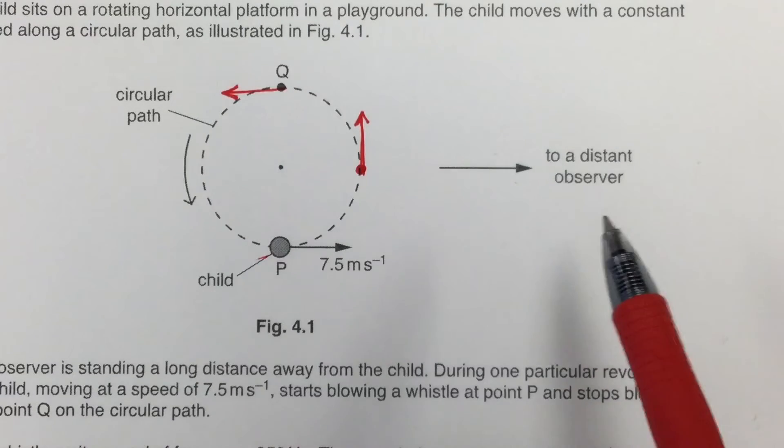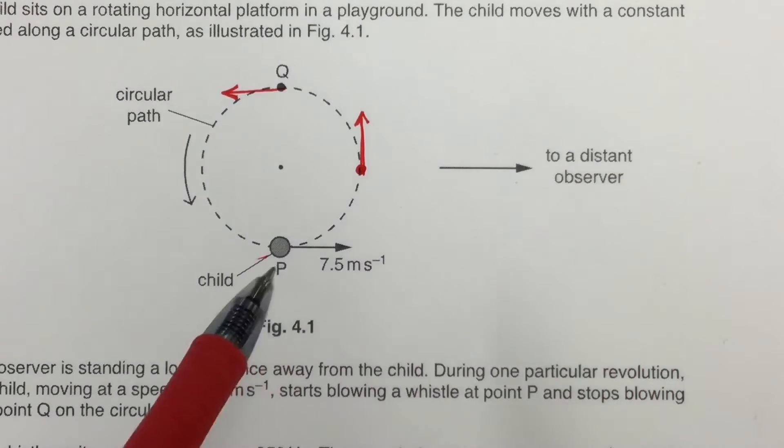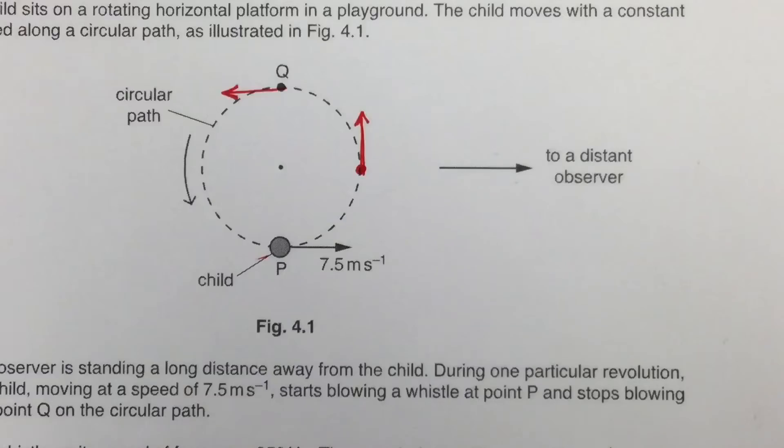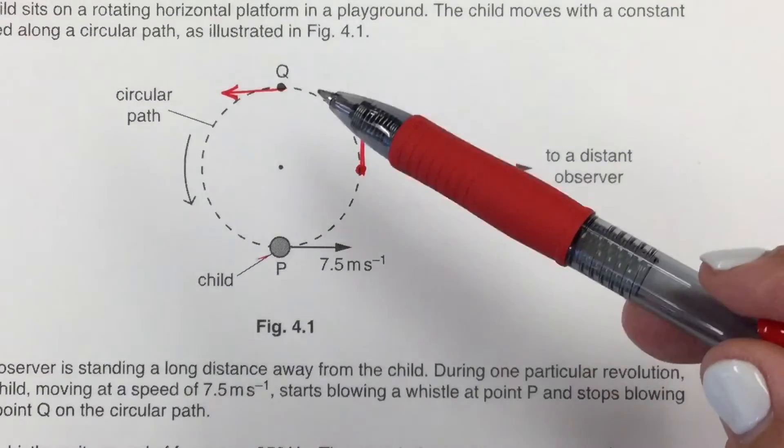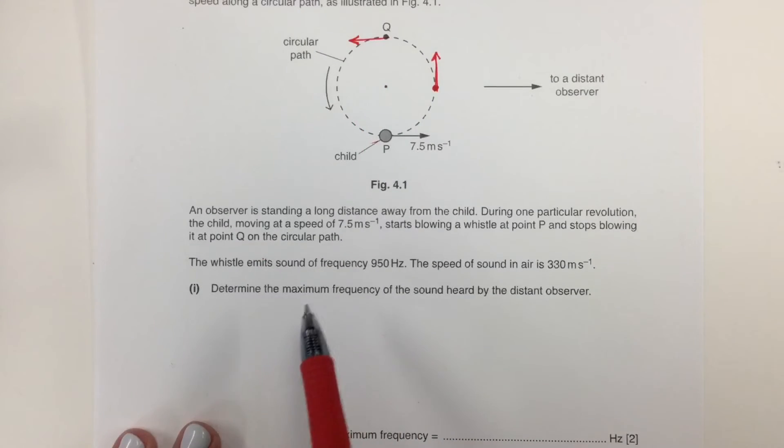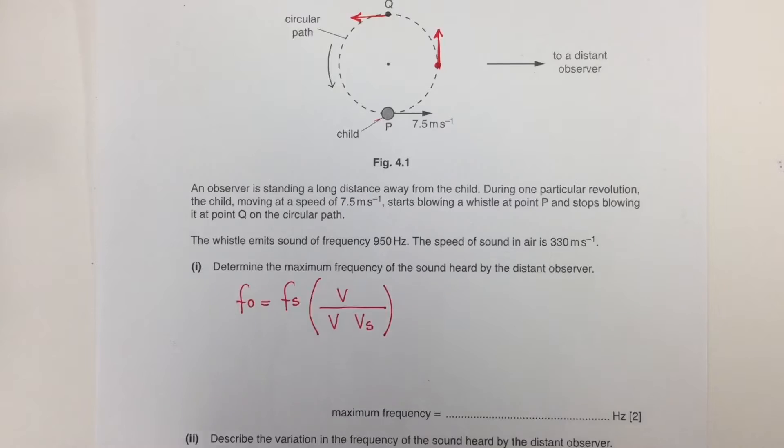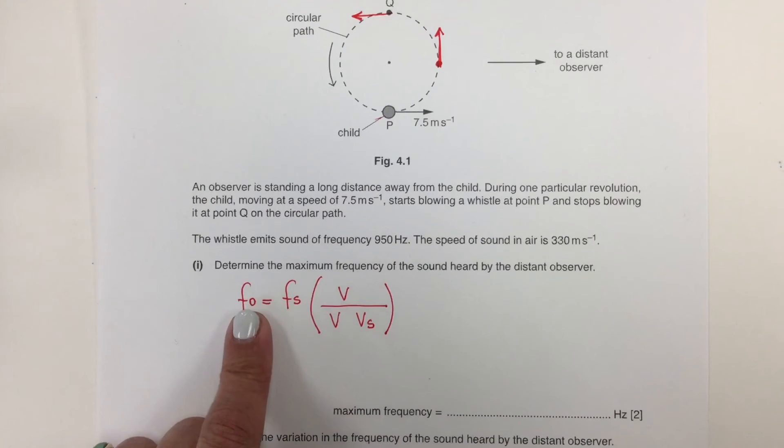The observer is going to hear a higher frequency when the velocity is toward the observer and a lower frequency when the velocity is away from the observer. The question is asking the maximum frequency, which is going to happen right here.